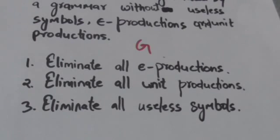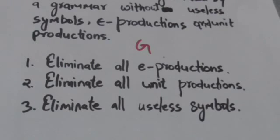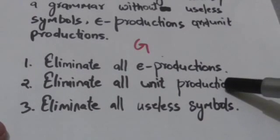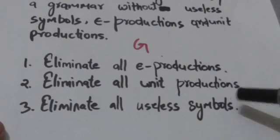So first we have to perform empty productions removal; after this we should eliminate unit productions from grammar G. Now the elimination of unit productions may create useless symbols in grammar G, so we must then eliminate useless symbols from grammar G.